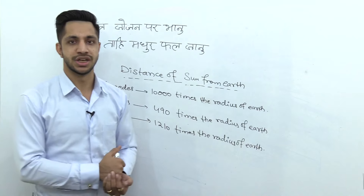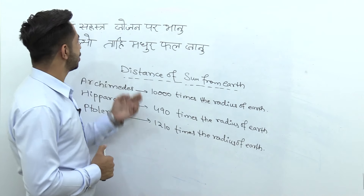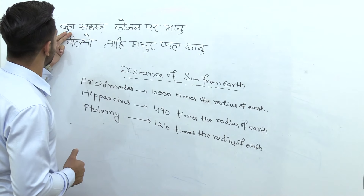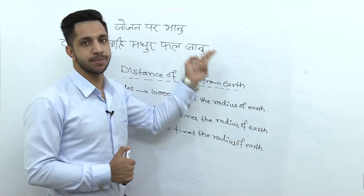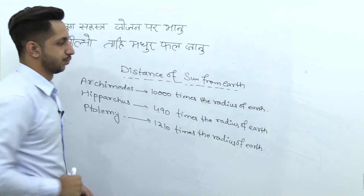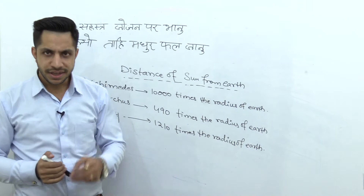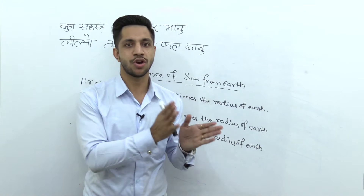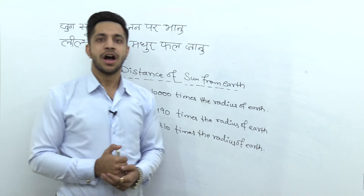Maine Hanuman Chalisa se ek shlok nikala. Woh shlok hai: 'Jugg sahistr jogen parbhanu, liliyutahi madhur falijanu.' Kya matlab hai is ka? Is shlok mein hi chupa hua hai distance of sun from earth.